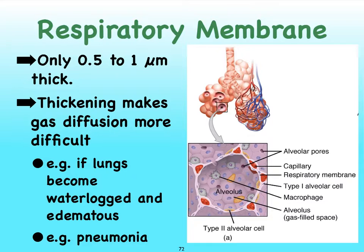Anything that causes thickening of this respiratory membrane is, of course, going to make it much more difficult for the gases to make it from one area to the other — that is, from the alveolus to the capillary, or vice versa. The gases would literally have to travel further. This can happen typically if the lungs become very waterlogged; there's a lot of swelling going on, which we see in pneumonia, for instance.